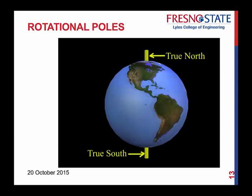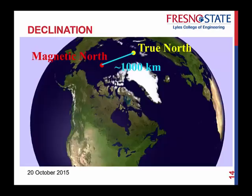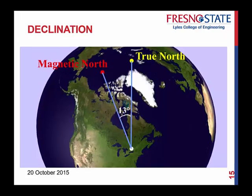With your rotational poles, this is your true north pole and your true south pole — that's what the earth rotates around. Magnetic north is in a different location, about 1,000 kilometers away from where true north is. This location does change. This is just an example — saying magnetic north is about 1,000 kilometers away, with a point just north of the United States.